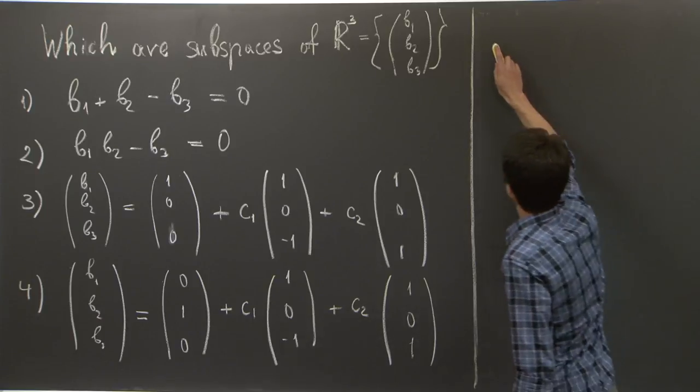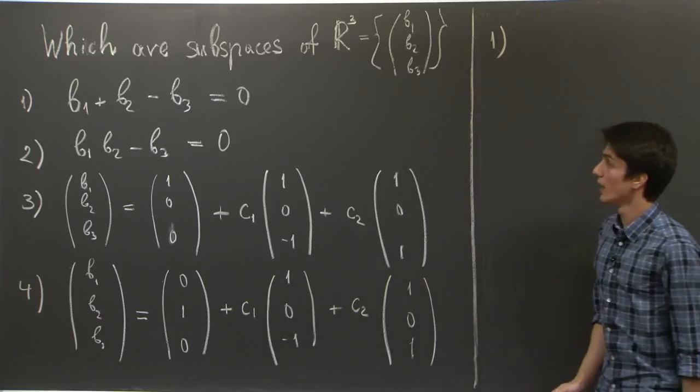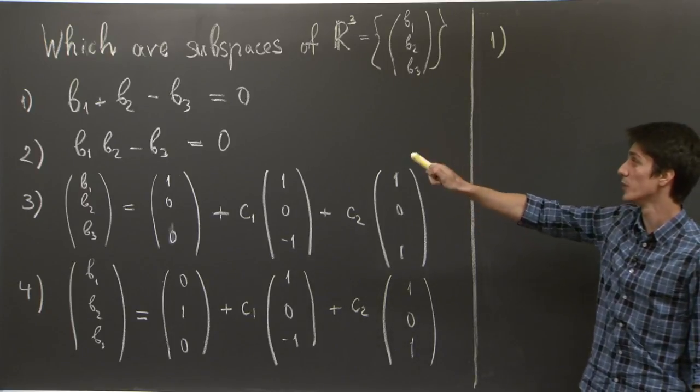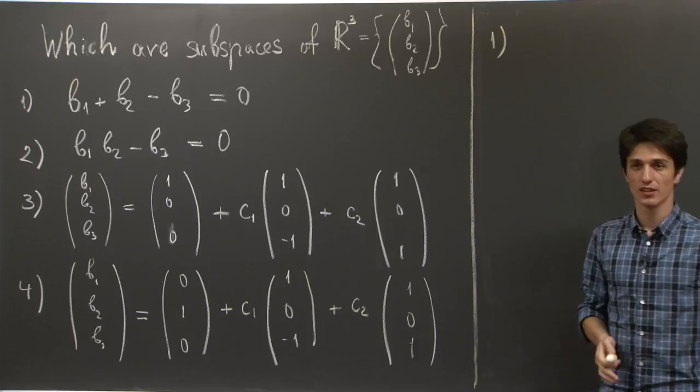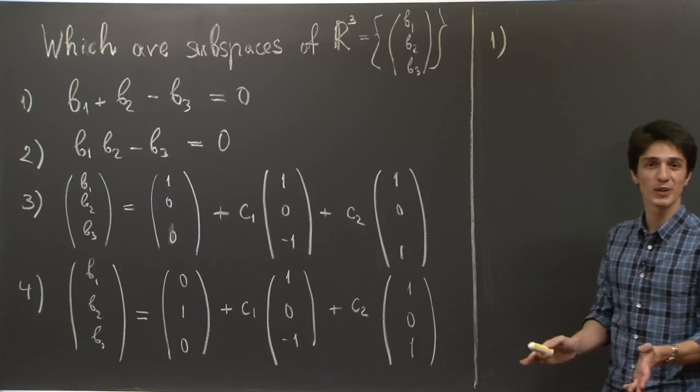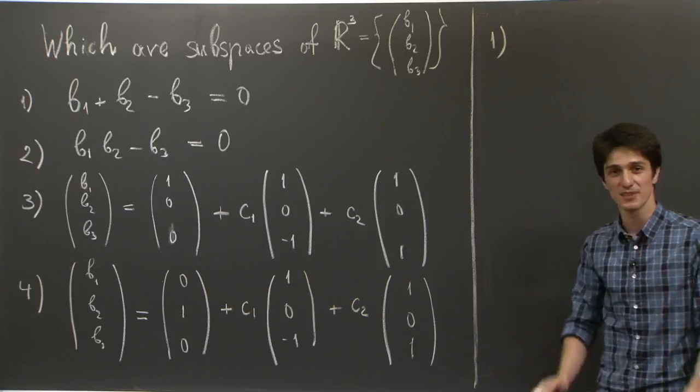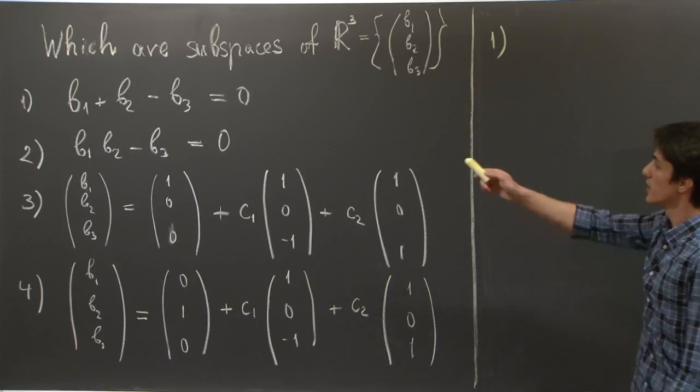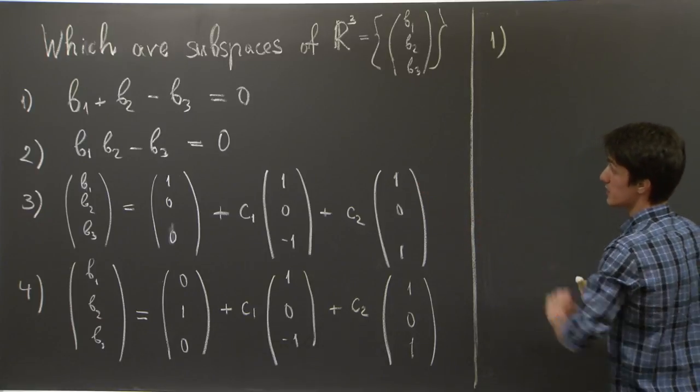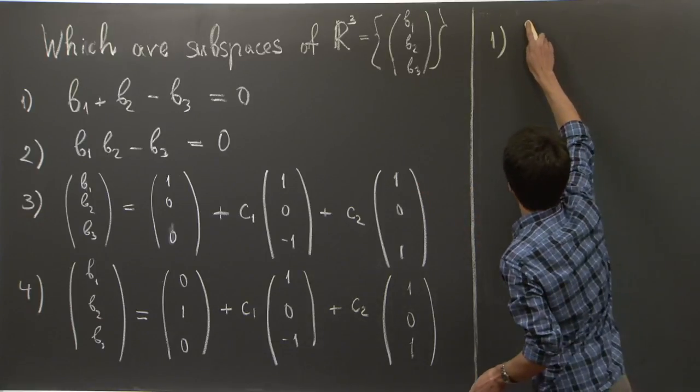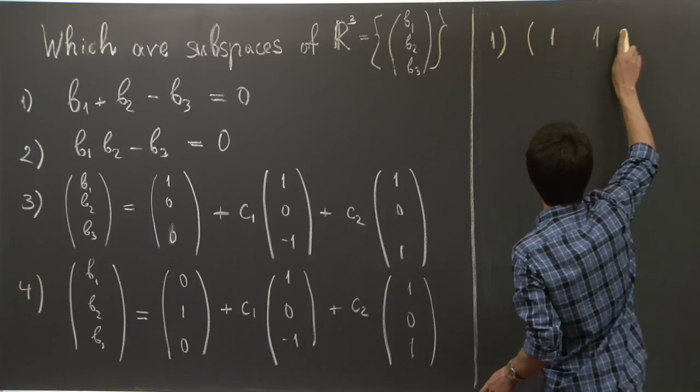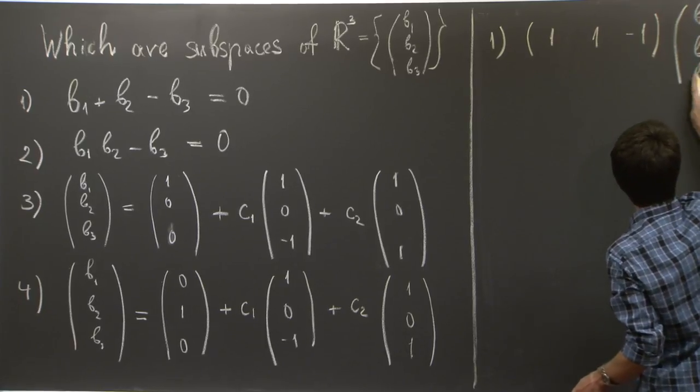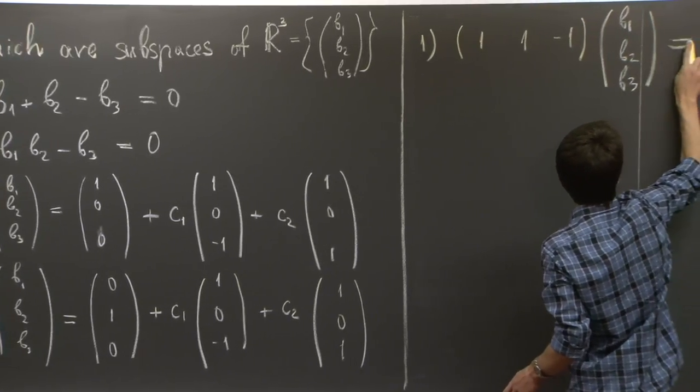So let's see if we can apply what we've learned in lecture to our problem. Number one. We are given a linear equation relation between b₁, b₂, and b₃. Once we have something linear, we know we can always write this as a matrix equation. So in particular, b₁ + b₂ - b₃ = 0. We can just write it as the matrix (1, 1, -1) times (b₁, b₂, b₃) equal to 0.